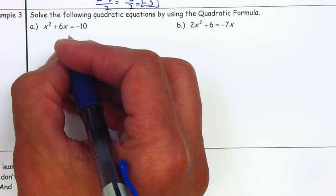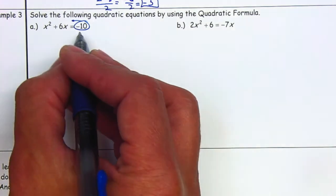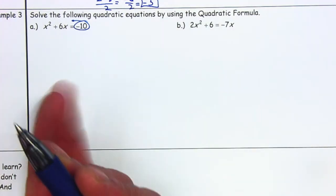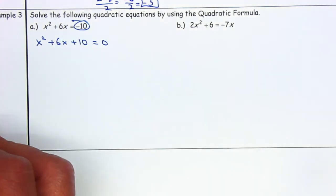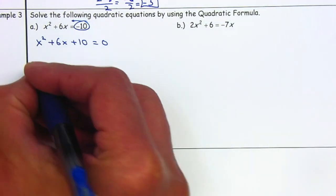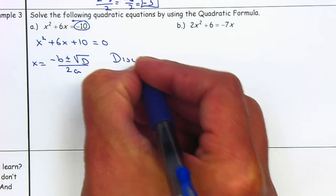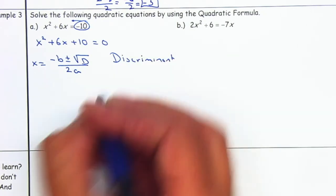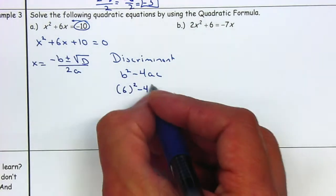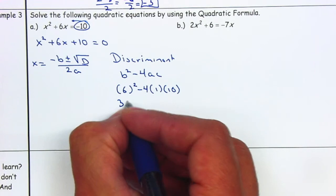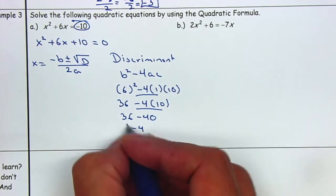First, I want to make it equal to zero so I can find the values of A, B, and C. I'm going to move the 10 to the left, because it's positive. We want to use the quadratic formula, so we need to find the values of A, B, and C. This gives x squared plus 6x plus 10 equals 0. The discriminant is b squared minus 4ac: B is 6, A is 1, and C is 10. So 36 minus 4 times 1 times 10 gives 36 minus 40, which is negative 4.